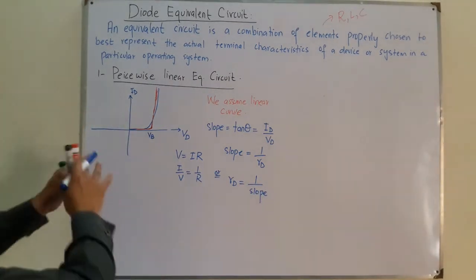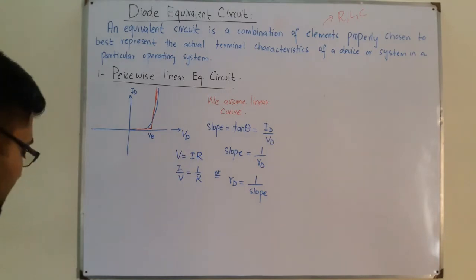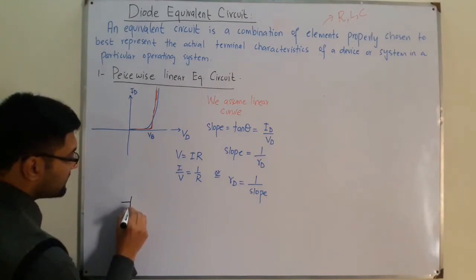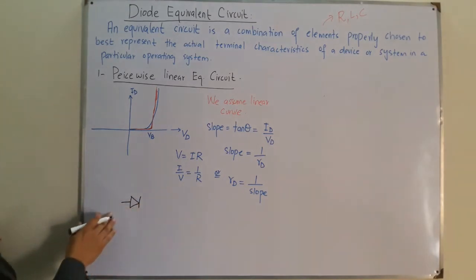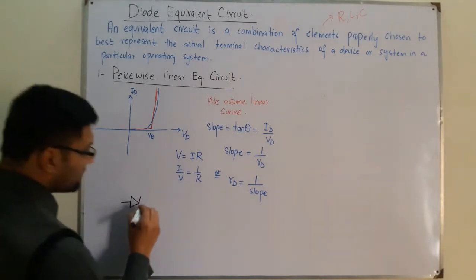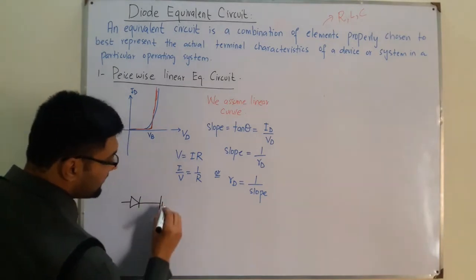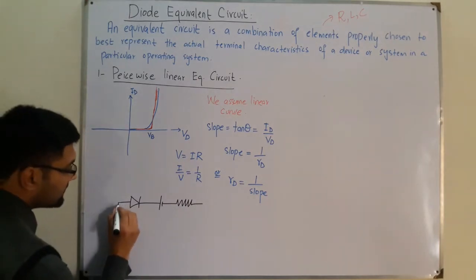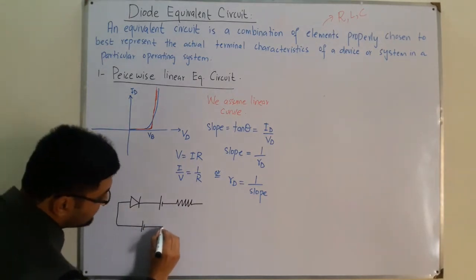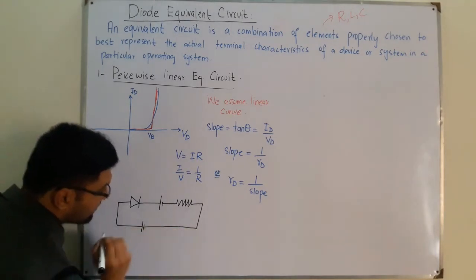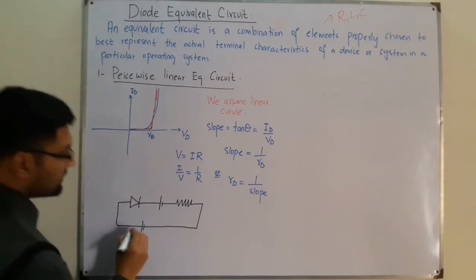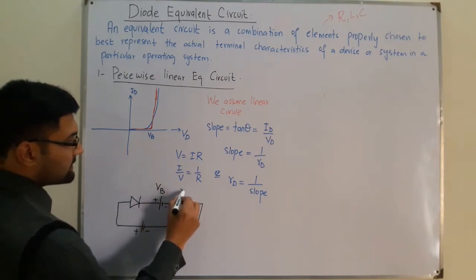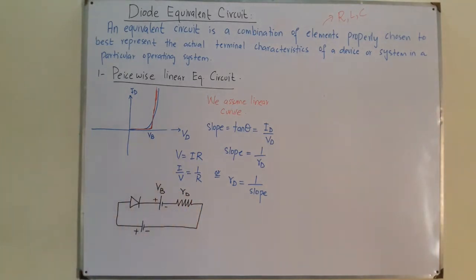In the equivalent circuit, we have three components: the ideal diode (through which voltage drop is 0 and current is theoretically infinite), the barrier potential VB, and the diode resistance RD. When forward biased, the circuit is: ideal diode, plus the barrier potential VB, plus resistance RD.